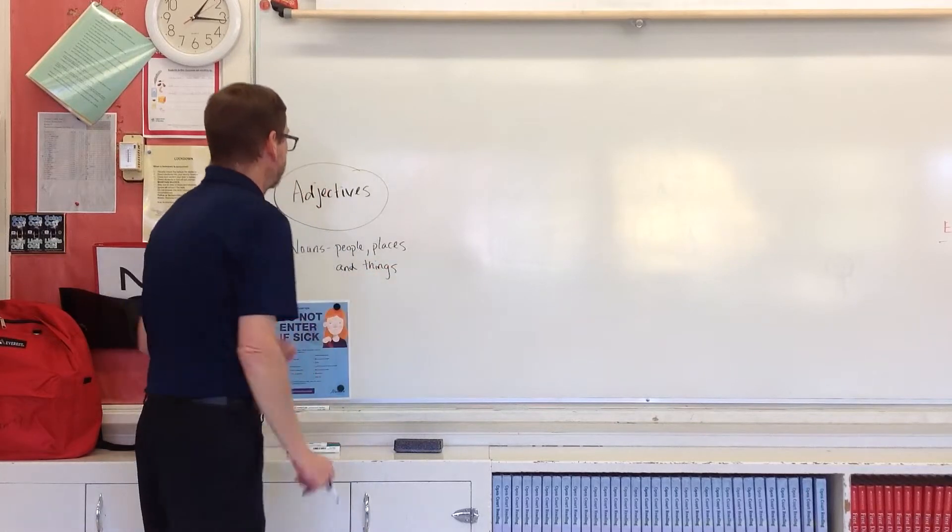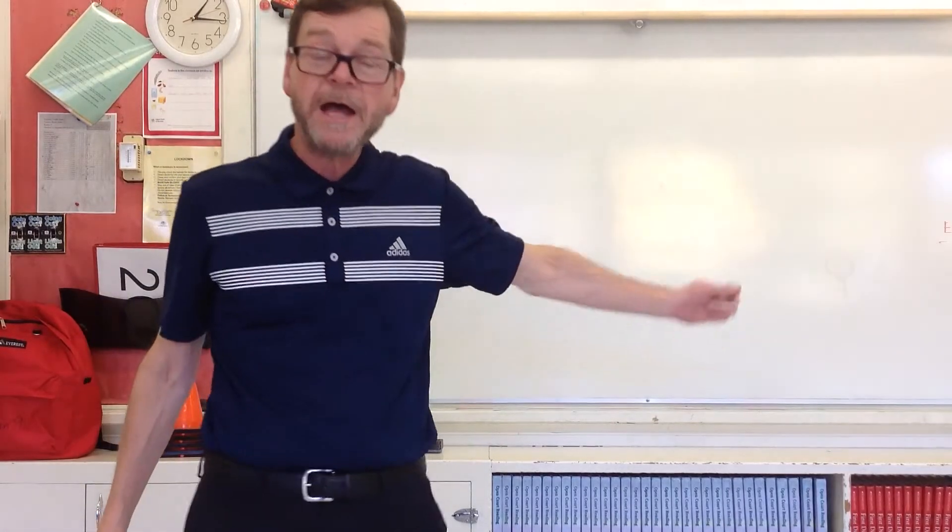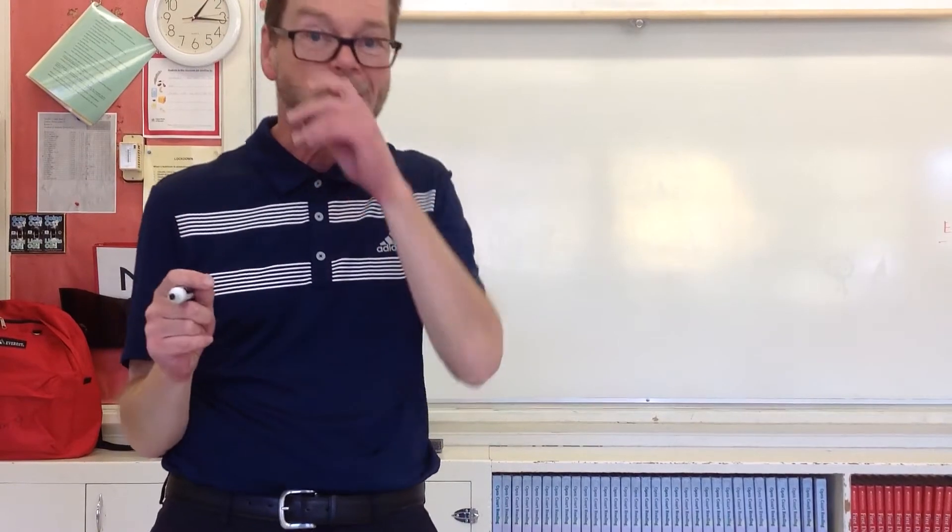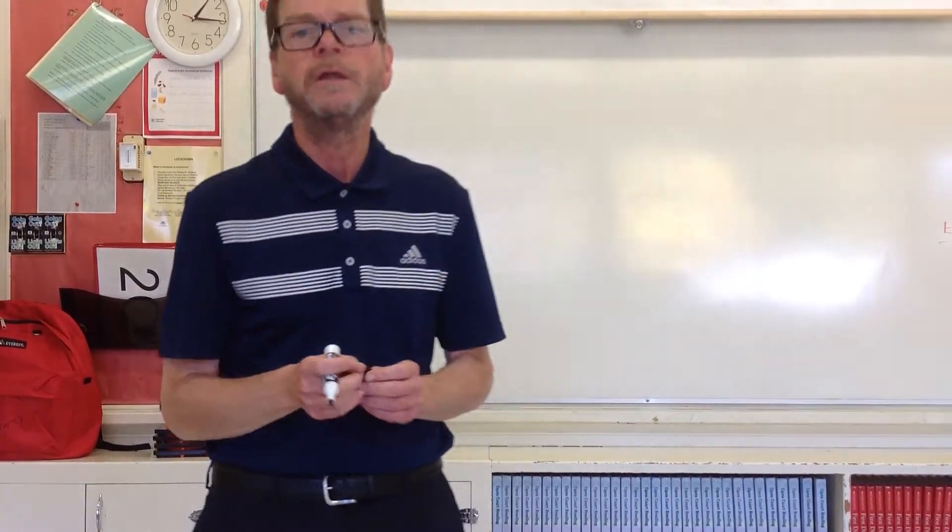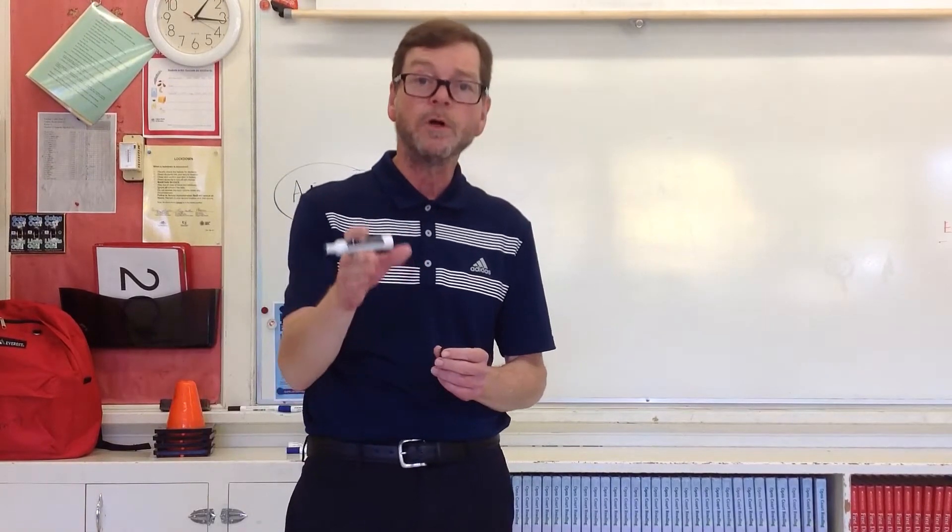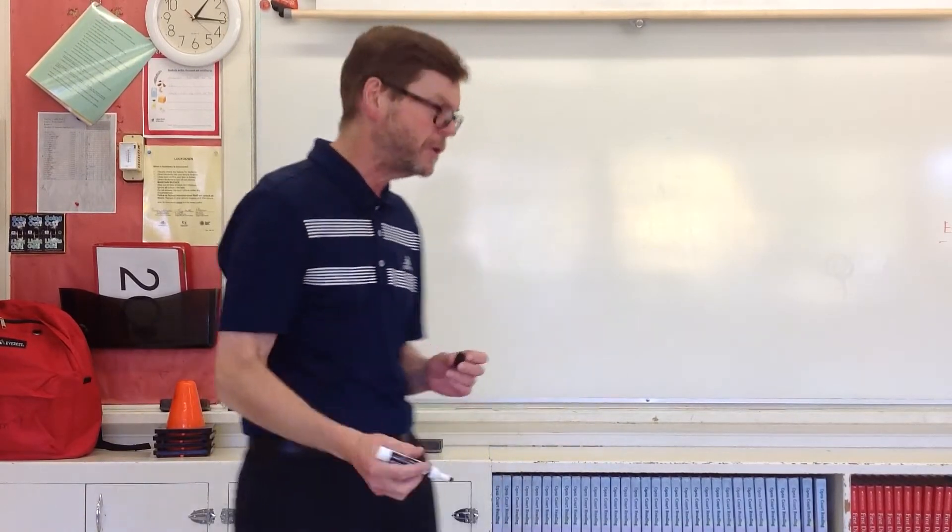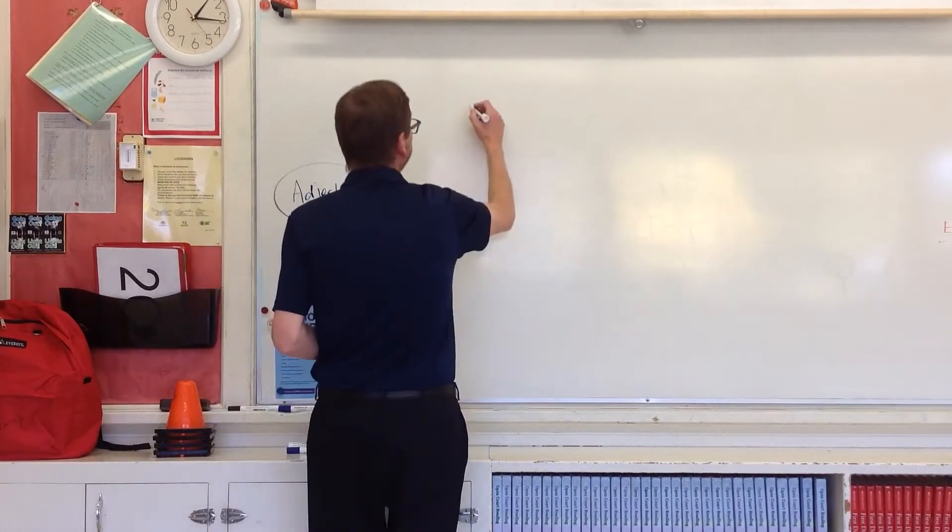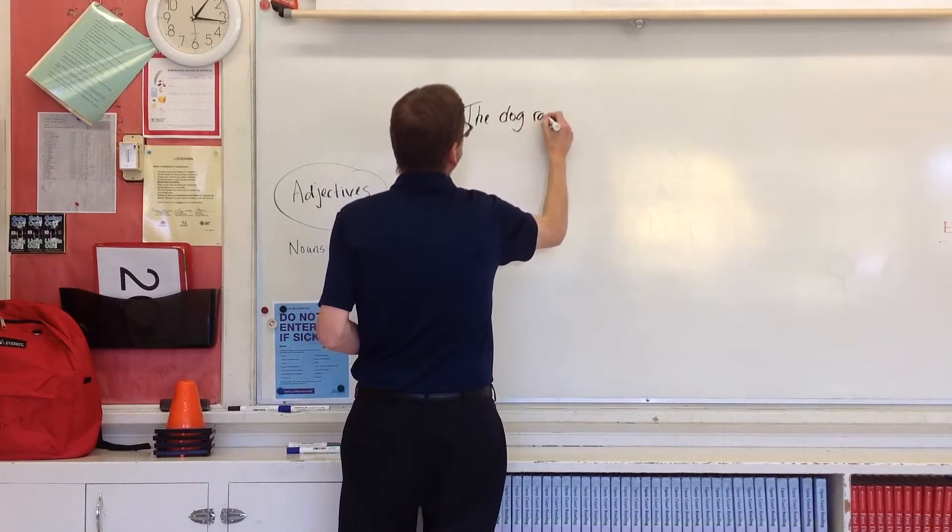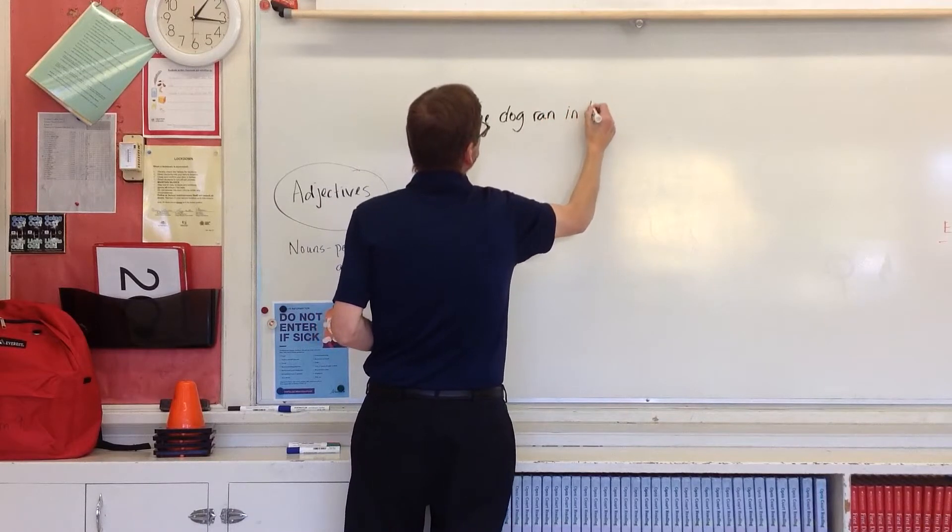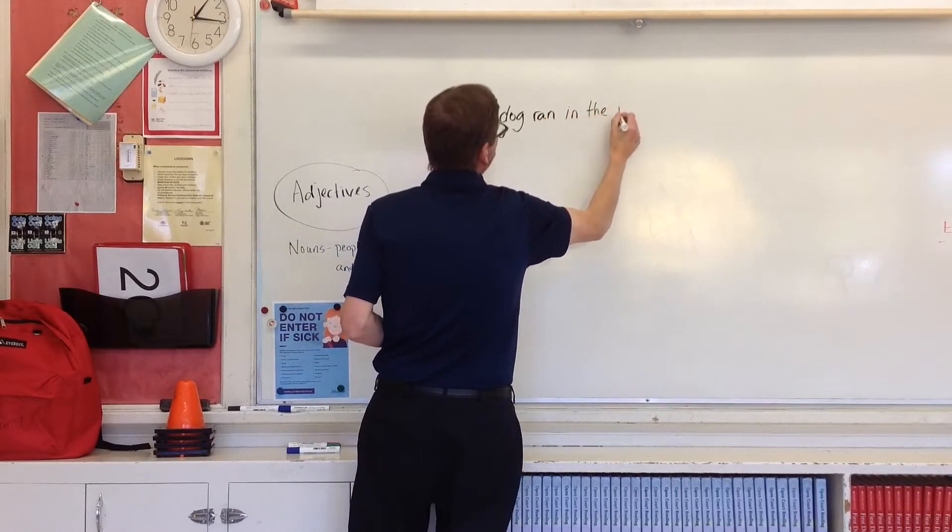Alright, so we're going to learn how to use our adjectives to describe our nouns. I'm going to write a really simple sentence here, and I want you to write it down, either on a piece of paper, in a workbook, or in your journal. So here's our really simple sentence. The dog ran in the park.